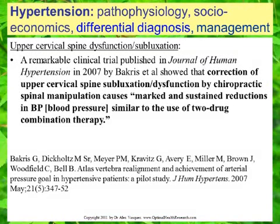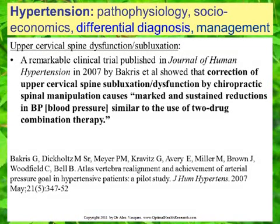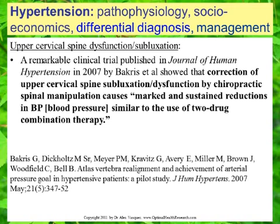The only logical conclusion is that this therapeutic intervention caused the blood pressure reduction — more specifically, that it was some type of correction of upper cervical spine anatomy, biomechanics, or the static anatomy of the bones and joints in relation to each other. In ways that haven't been completely elucidated, this was corrected by chiropractic spinal manipulation, leading to marked and sustained reductions in blood pressure similar to the use of two-drug combination therapy.